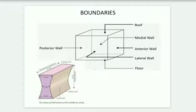Anteriorly there is tensor tympani and the auditory tube, with the internal carotid artery. Posteriorly there is the mastoid wall, with the pyramidal eminence, aditus to the antrum, vertical bony canal for the facial nerve, and the tympanic antrum. The medial wall has the promontory, fenestra vestibuli (oval window), round window.